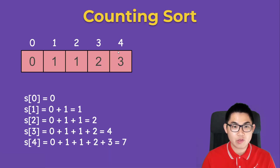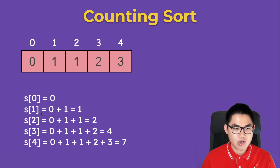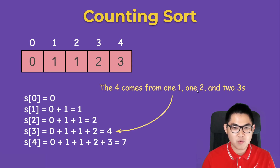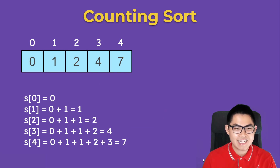To find the prefix sum, take the current value and add all the values before it. For example, the prefix sum at index four is zero plus one plus one plus two plus three, which gives you seven. The prefix sum at index three is zero plus one plus one plus two, which equals four. That four comes from one one, one two, and two threes — meaning one occurred once, two occurred once, and three occurred twice.